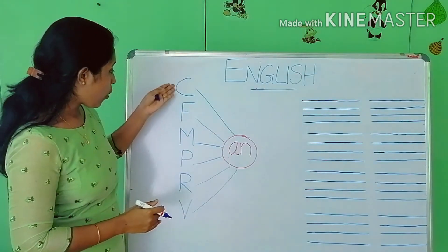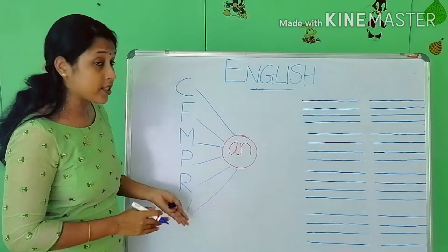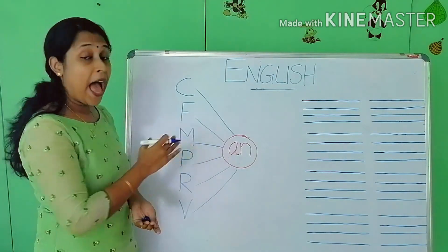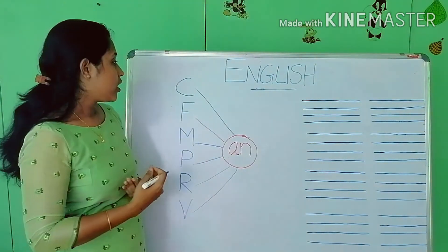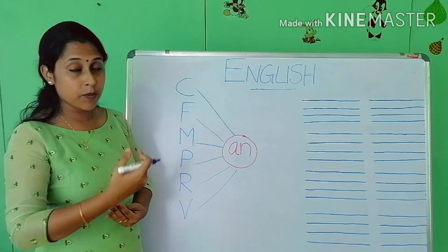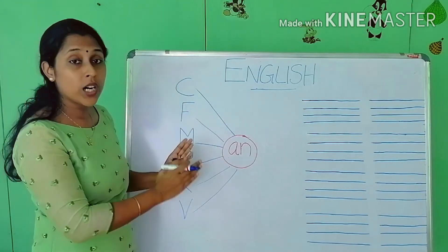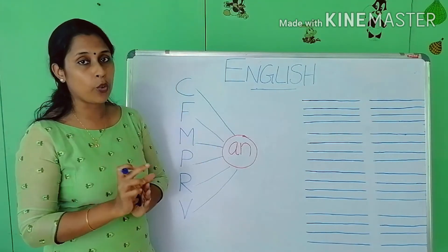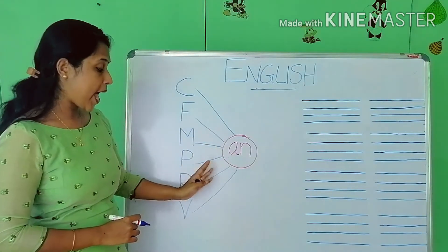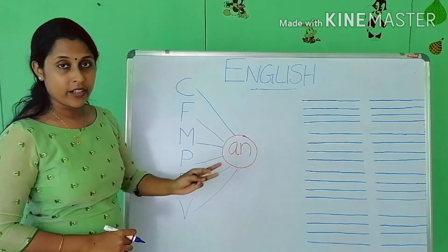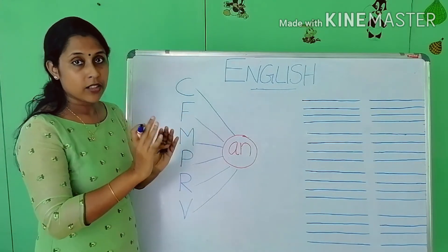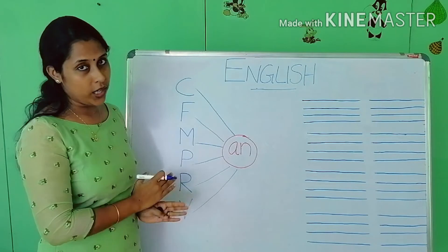So we learned six words with AN. These are the AN word family. They also make rhyming words. Rhyming words means all these words end with the same sound — can, fan, man, pan, ran, van. All these words end with the same sound AN, so they are all rhyming words.